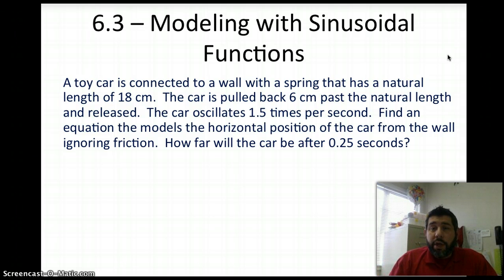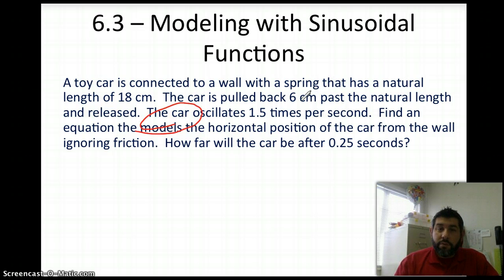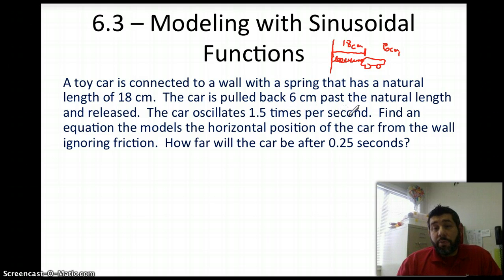A toy car is connected to a wall with a spring that has a natural length of 18 cm. Let me just draw a quick picture here. So, I've got a wall, and then there's a spring, and then there's like a little toy car attached to it. We're going to pull this toy car back, and we're going to pull it back 6 cm. This distance here from the wall to the spring is 18 cm. We're going to pull it back 6 cm, and we're going to let it go. And the car is going to oscillate at 1.5 times per second.